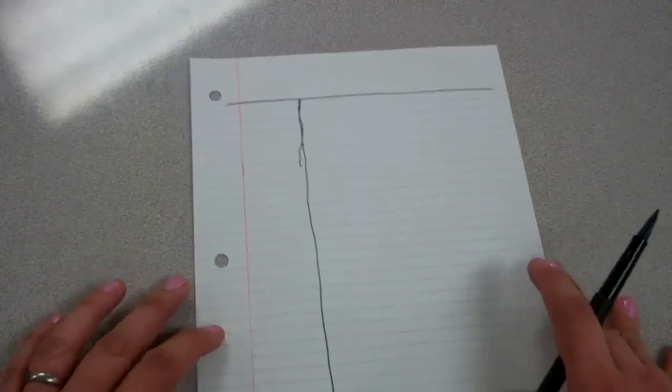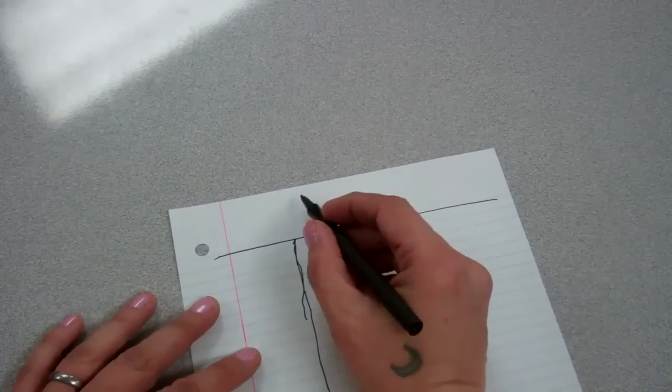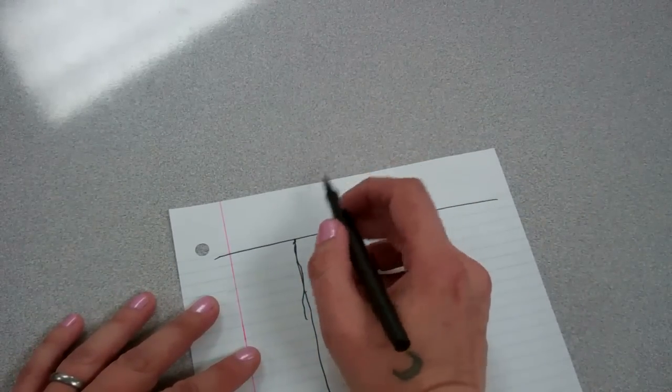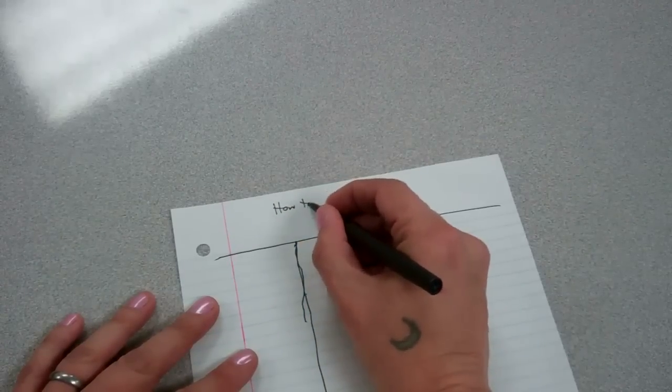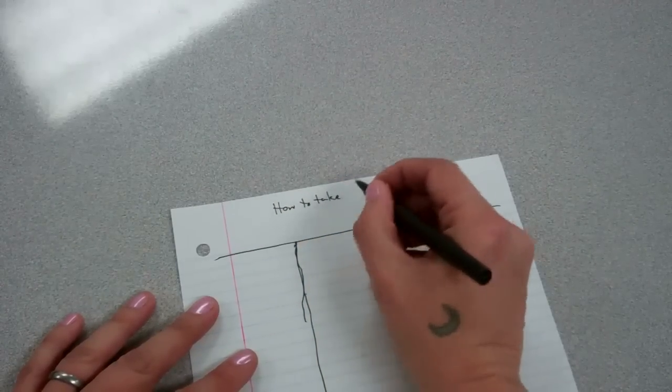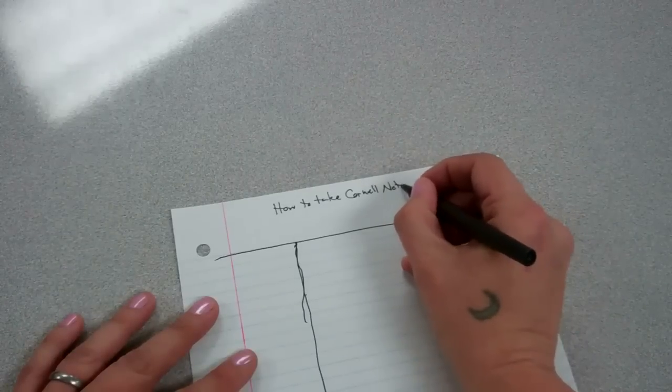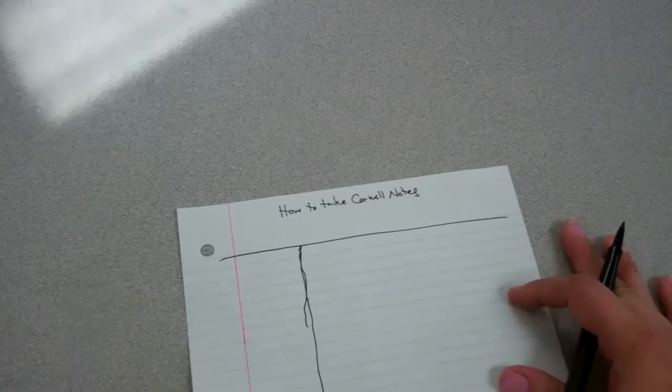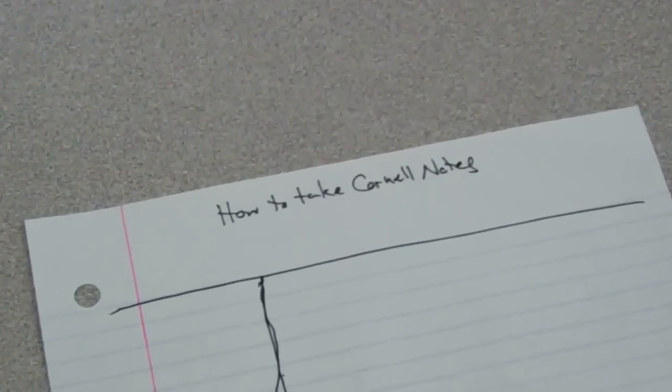Now, at the very top, you want to put the title of whatever it is you're taking notes on. In this case, you're taking notes on how to take Cornell notes. So that'll be the title. How to take Cornell notes. Please take a moment to make your page look like mine. You can pause the video.